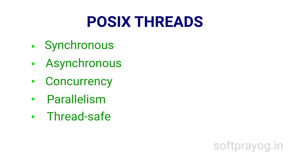Thread-safe: when we say that some code is thread-safe, we mean that it can be called from multiple threads and there won't be any harmful results. It doesn't mean that the code is efficient. The only requirement of thread-safe is safety — there are no errors resulting from the call. We can make a function thread-safe by putting a mutex lock at the beginning and unlock at the end, serializing the execution of the function across multiple calling threads. Or better still, we can guard just the critical data instead of the whole code with a mutex.